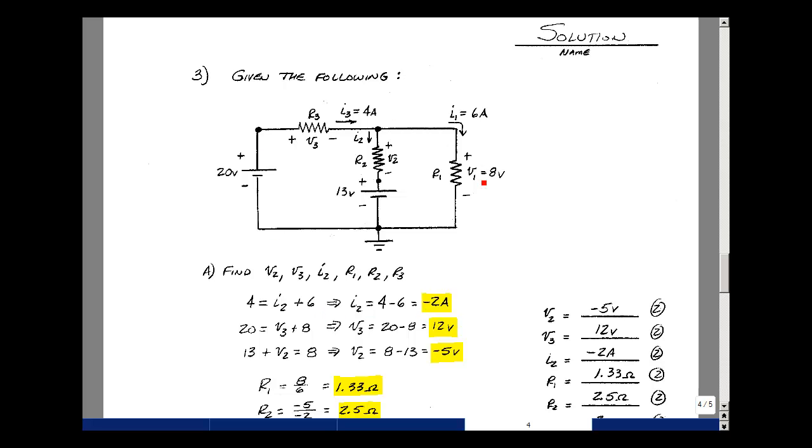If I look at this loop over here, I know the voltage across the battery. I don't know V3, but I do know the voltage V1. So the rise in voltage is 20, the drop is V3, and the drop is V1, which is equal to 8. So I could then solve for V3, which is equal to 12. I could also go around this loop here and know everything but one voltage. So the rise in voltage is 13, the rise in voltage is V2, and the drop is equal to 8. So I could solve for V2, that would be equal to minus 5.